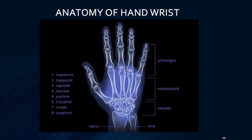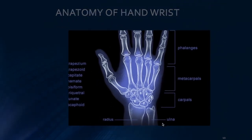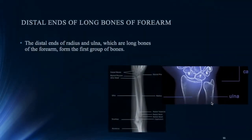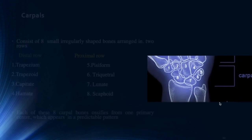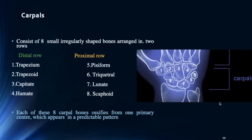Coming to the anatomy of the hand wrist, we can divide it into phalanges, metacarpals, carpals, and the distal end of long bones, which is the radius and ulna. The carpals can be divided into a proximal and distal row, consisting of 8 small bones, and each appears in a predictable pattern.